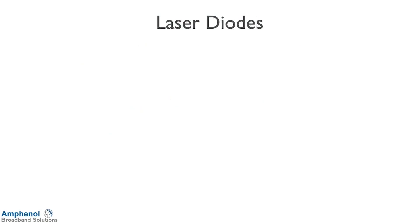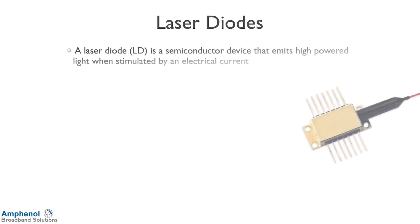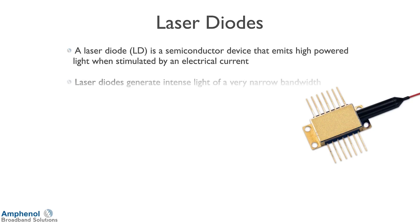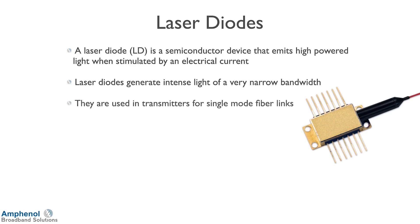A laser diode, LD, is a semiconductor device that emits high-powered light when stimulated with an electrical current. Over on the right is a picture — it looks very similar to a hybrid amplifier that you see on a circuit board, but it has a little tail where the light comes out. Laser diodes generate intense light at a very narrow bandwidth. They're used in transmitters for single-mode fiber applications in the cable TV industry, and are the most common type of lasers.